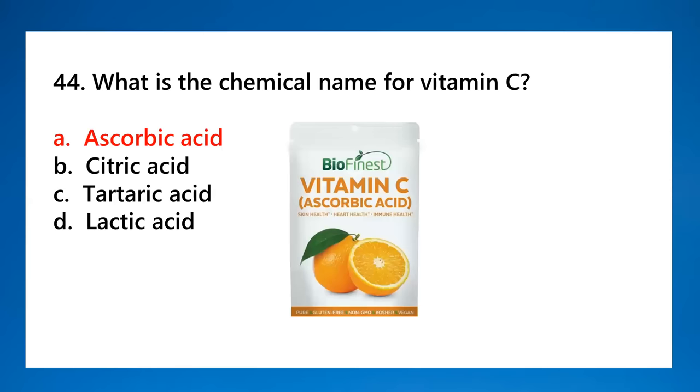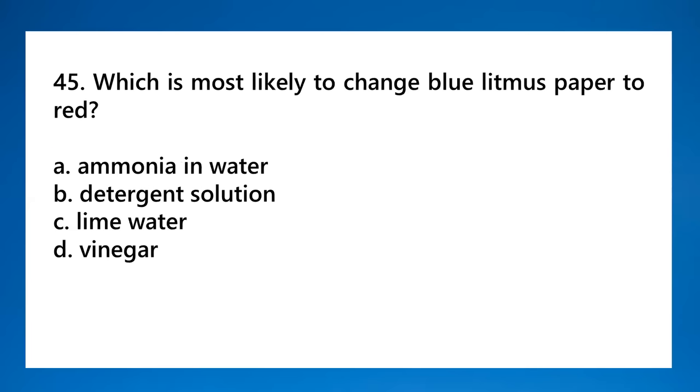Number forty-five: which is most likely to change blue litmus paper to red? From blue to red means it's an acid. Red to blue is a base - blue-base, both have letter B. Acid turns red. Among the options, vinegar is the acid. Ammonia, detergent, and lime water are all bases. Number forty-six: in photosynthesis, which molecule is reduced to produce glucose? Glucose comes from carbon dioxide. Oxygen comes from water. Remember: water to oxygen, carbon dioxide to sugar, to glucose.